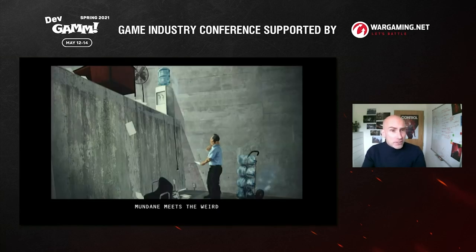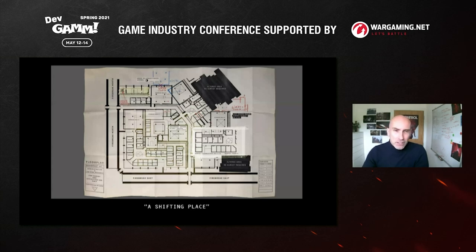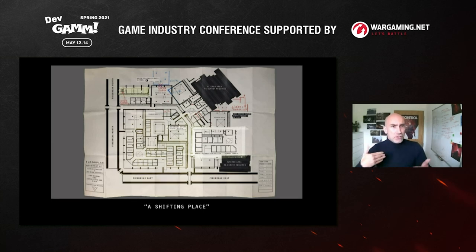An early concept I produced to capture this for the team was the mundane meeting the weird — the machinery of a bureau meeting the paranatural and strange behaviors in the Oldest House. There's a water cooler delivery person — a normal office function — but the building shifts, so things move around and sometimes the normal functions of the bureau meet the paranatural face on. Another early concept was the map of the bureau. Sam Lake is a huge fan of the book House of Leaves, which describes a building that changes its internal dimensions in strange, unaccountable ways — something we had in mind for the Oldest House.